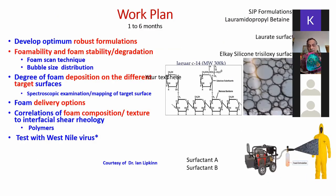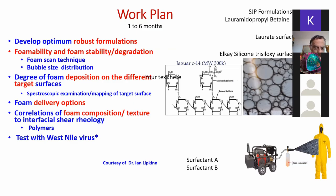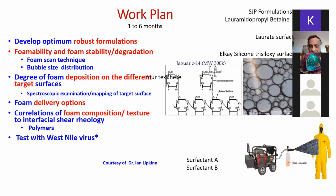Our work plan: we recently received an NSF rapid grant. The plan is to develop robust formulations using green surfactants for depositing on different target surfaces. We will try to understand the principles involved using spectroscopy that we have, and also try various delivery options. We did some tests on the Ebola virus using Dr. Ian Lipkin's BSL-3 lab. We don't have a level four lab, so we'll try to collaborate with him to continue that work.